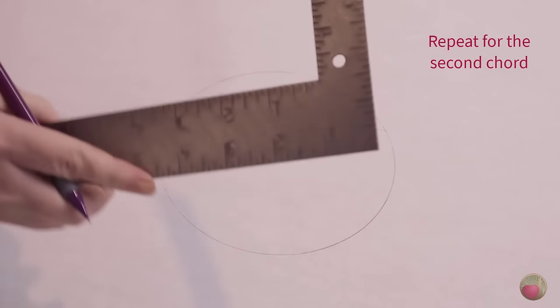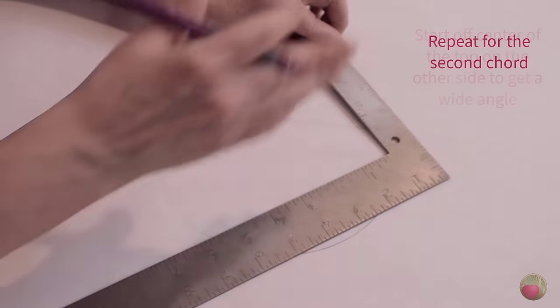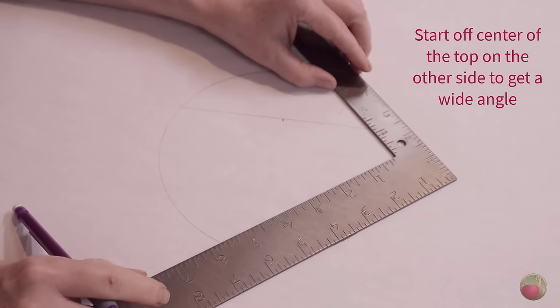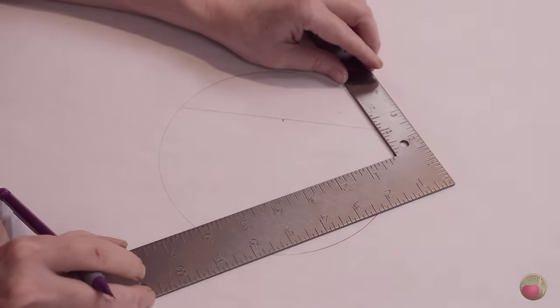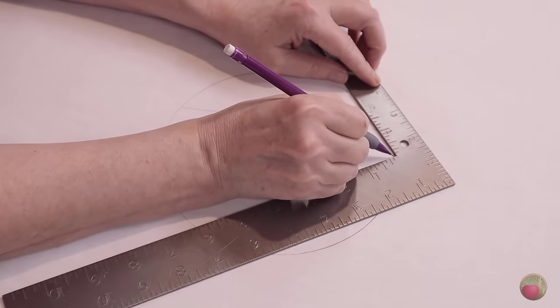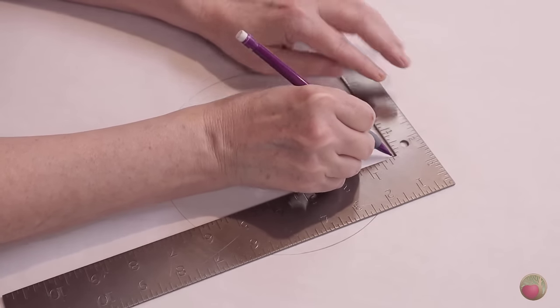Okay, now we need to do another one, and again I'm going to start at the top so we have a pretty wide angle on this. And I'm going to go ahead and eyeball it so I don't have to spin it so much. That's pretty close. Put my pencil right there on the circle.